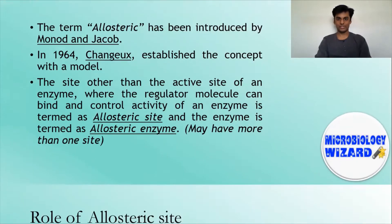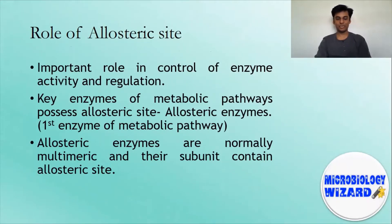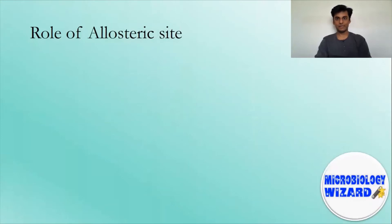Allosteric site plays an important role in control of enzyme activity and brings about metabolic control. Usually, the key enzymes of the metabolic pathways possess an allosteric site. Such enzymes are called allosteric enzymes. Generally, the first enzyme of a metabolic pathway is allosteric. Allosteric enzymes are normally multimeric and their subunits contain an allosteric site. It can bind with an enzyme inhibitor or activator molecule to bring about a corresponding effect.